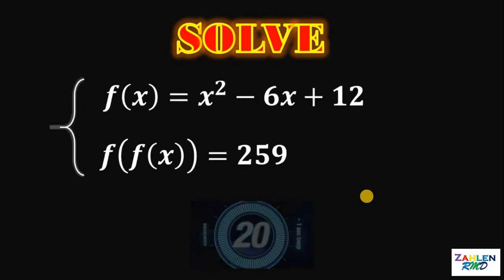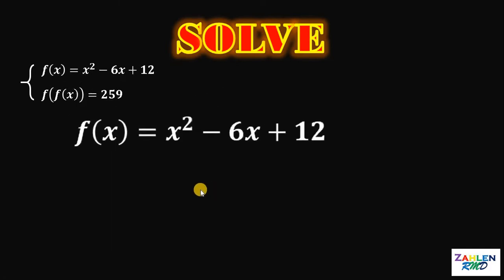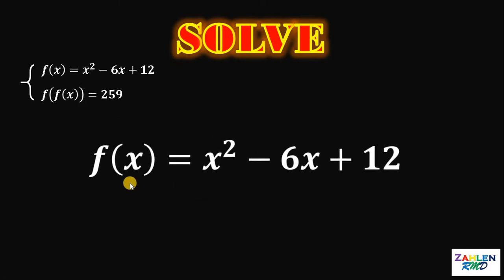Let's answer this question together. Our goal is to solve for the possible values for x, given these two conditions. So the first thing to do is to work with this function f of x equals x squared minus 6x plus 12. Now, we have f of f of x. This is also called composition of function.